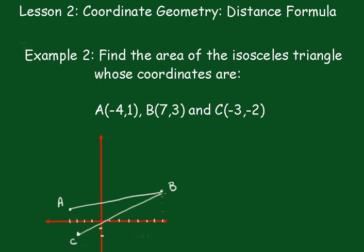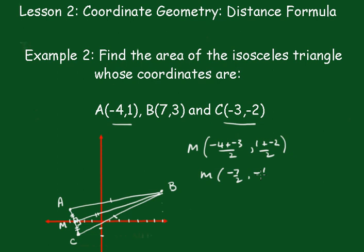From that you can tell which two sides are equal, obviously it's AB and BC. Now to work out the area we need to find the height. The height will occur at the midpoint because these are congruent triangles. So we'll take point A and C and the midpoint is going to be equal to (-4 + -3)/2 and (1 + -2)/2, which gives the result of -7/2 and -1/2.